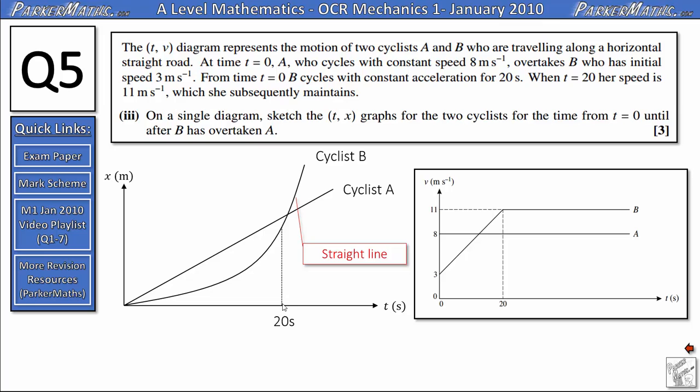Remember this is only a sketch so it doesn't have to be perfect. You don't need to mark on 20 seconds or anything like that. The important point is that A is a straight line here and that B is curved. Strictly speaking it should be a parabola but it doesn't have to be perfect. All that needs to happen is that the velocity needs to increase as we go along and then ideally at some point it should start to go in a straight line which is steeper than the straight line for cyclist A. So this point where they cross is where cyclist B overtakes cyclist A.